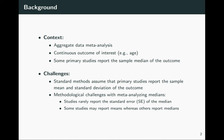I'm going to begin by going over the context of where this package can be used. I'll consider the setting of an aggregate data meta-analysis with a continuous outcome, such as age. Some or perhaps all of the primary studies report the sample median of the outcome. This very commonly occurs when data are skewed, so authors may choose to report the median.